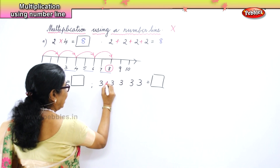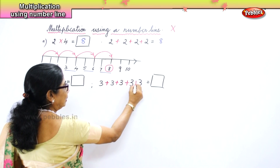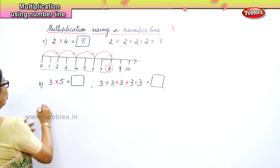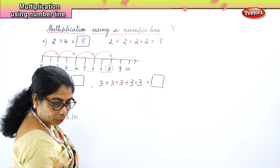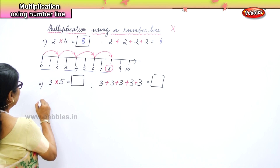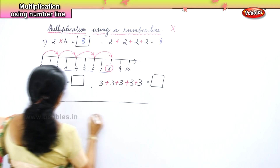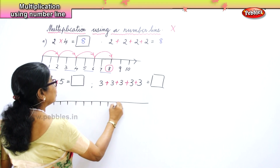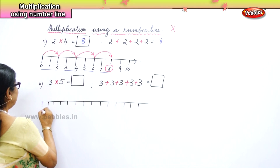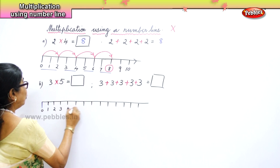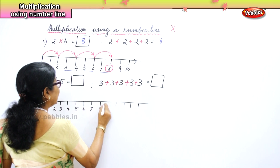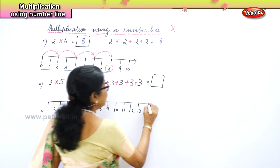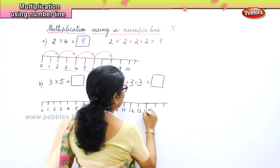That is three plus three plus three plus three plus three. Now let's write the number line carefully. We always begin with zero. Zero, one, two, three, four, five, six, seven, eight, nine, ten, eleven, twelve, thirteen, fourteen, fifteen, sixteen, seventeen — and the line can extend to any number.